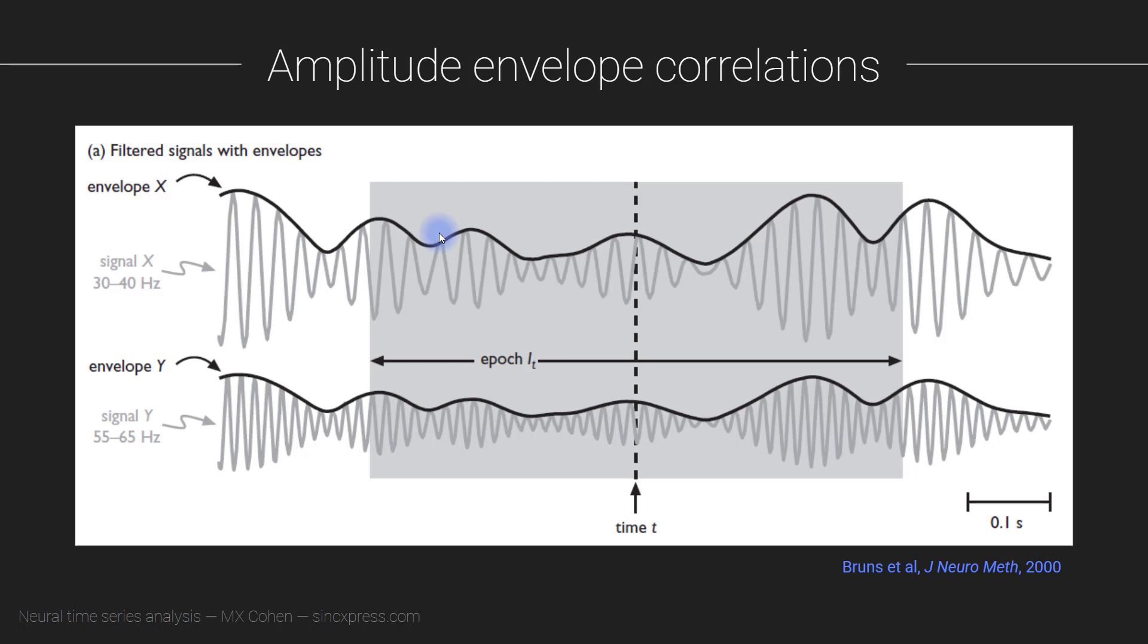Now this can be advantageous because it increases the flexibility of your possible analyses, but it can also be disadvantageous because it basically just opens up this huge search space. You know, you can compute connectivity between all possible pairs of channels and all possible pairs of frequencies, and you just end up with a mountain of correlation coefficients. And it's not really clear how to correct for multiple comparisons.